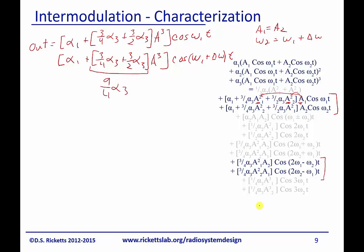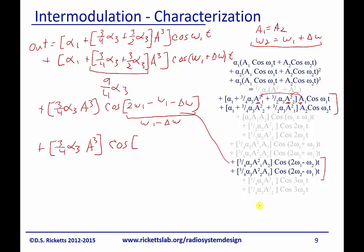So now let's go take a look at this down here, this first one. So I'm going to have 3 fourths Alpha 3 A cubed cosine 2 Omega 1 minus Omega 1 minus Delta Omega, where I've just substituted in this here. And this is going to give me Omega 1 minus Delta Omega. And then I can do the other one, 3 quarters Alpha cubed A cubed cosine, and this is going to be 2 Omega 2 minus Omega 1.